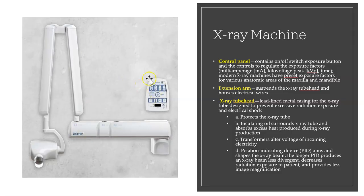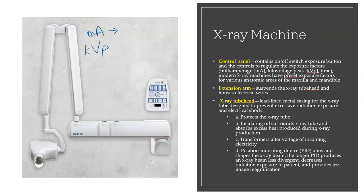When looking at the x-ray machine, there is the control panel where the on/off switch is. This is also where settings regulate exposure factors such as mA (milliamperage) and kVp (kilovoltage peak). mA controls density — increasing mA gives a darker image, decreasing mA gives a lighter image.